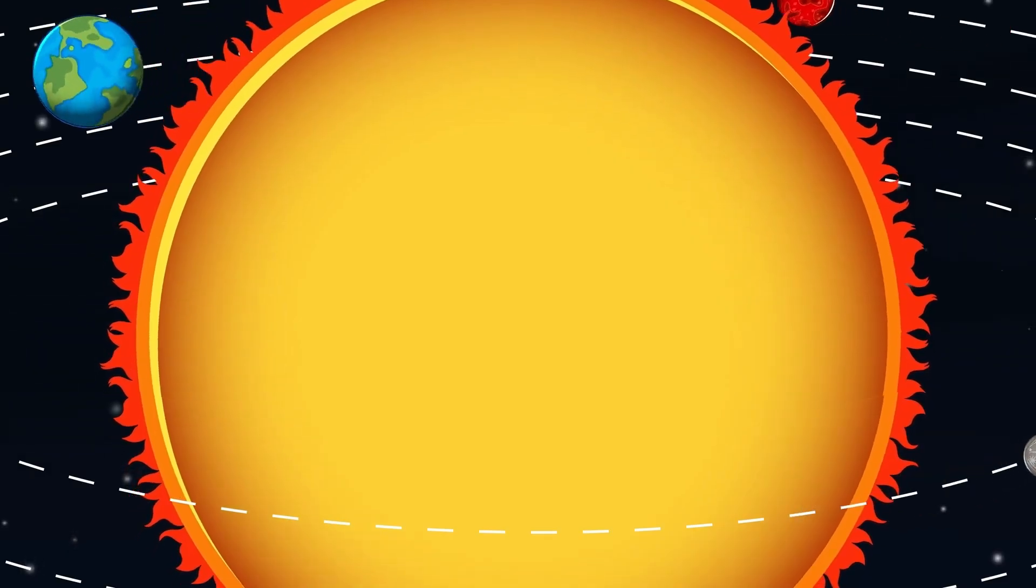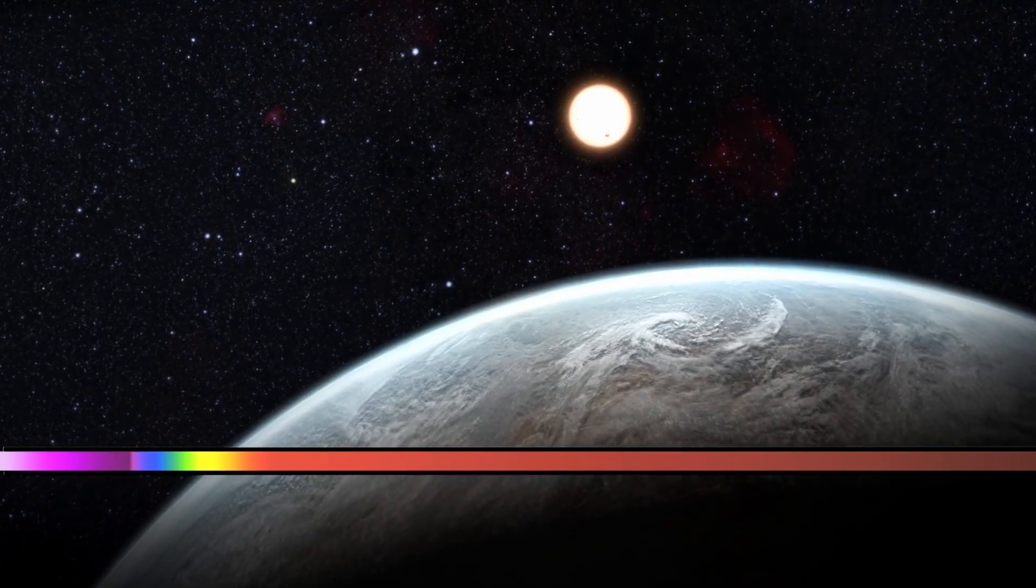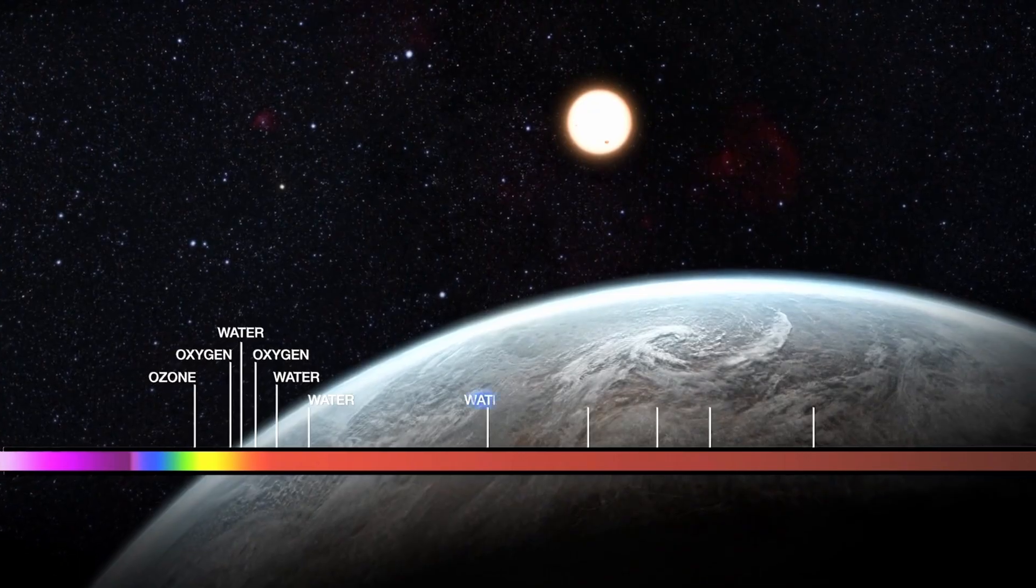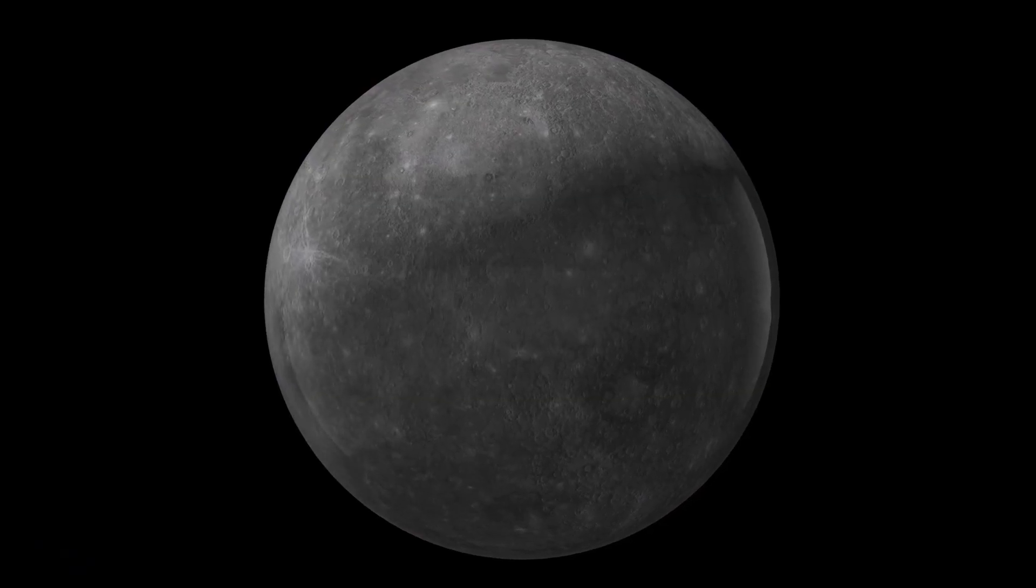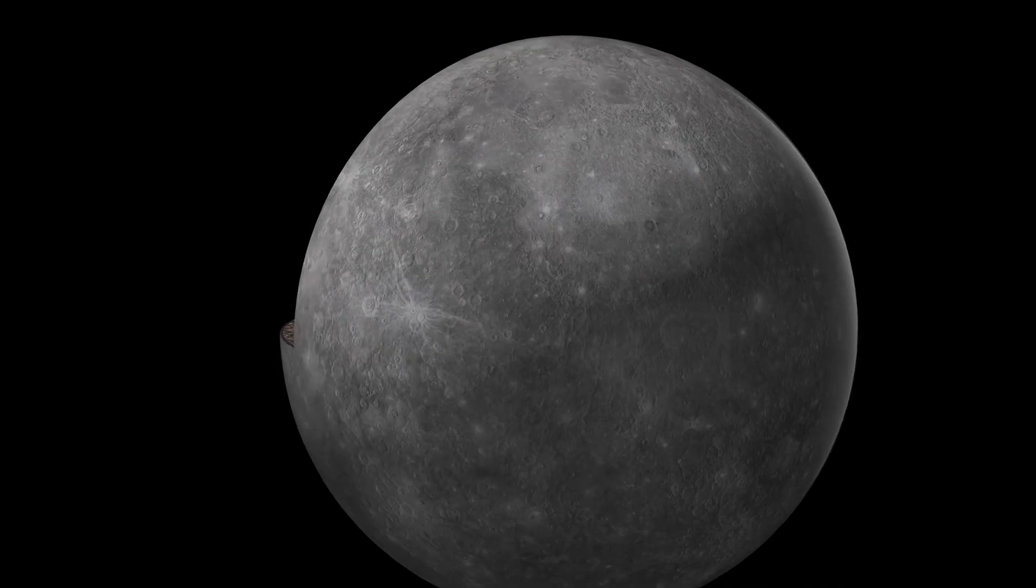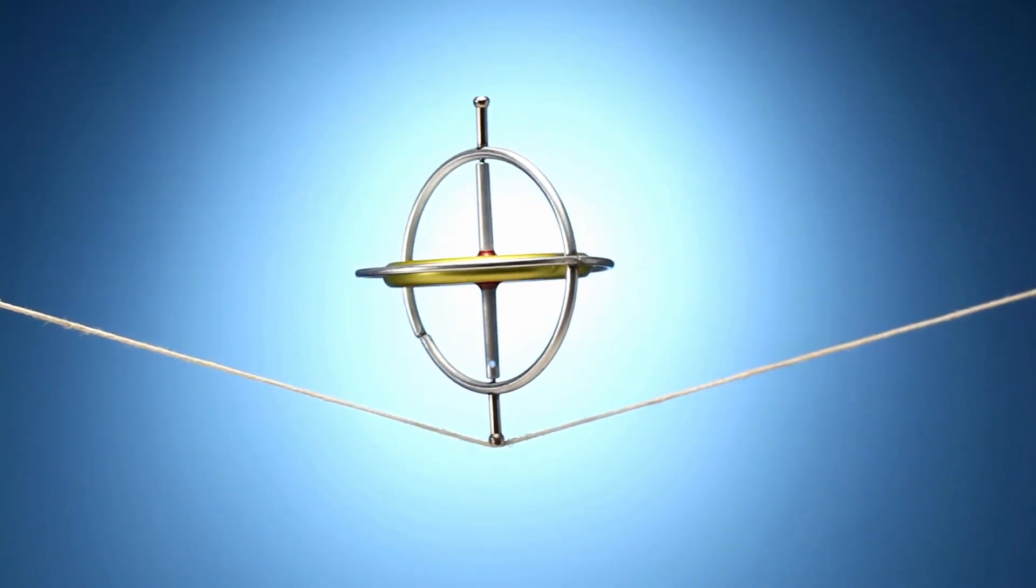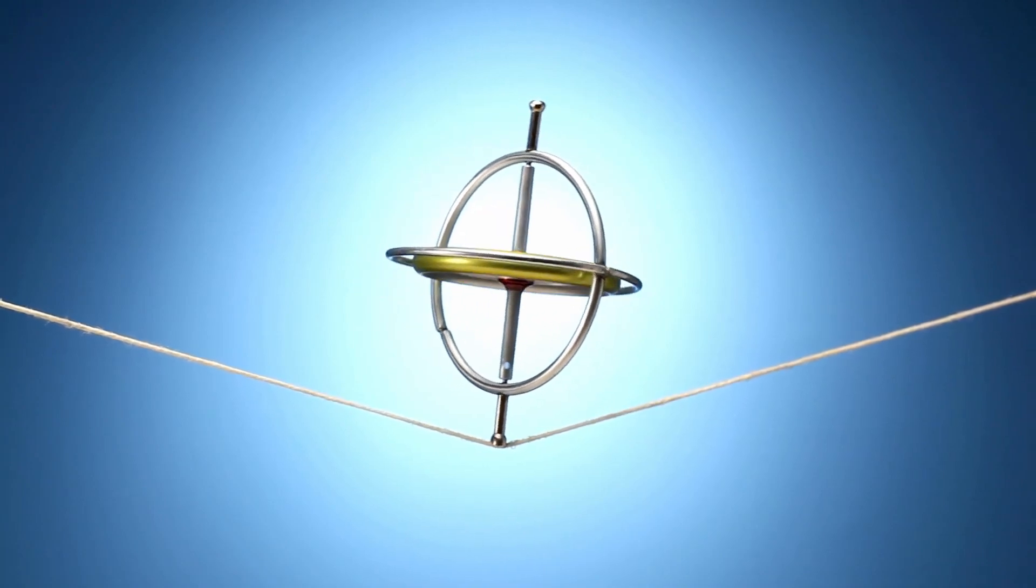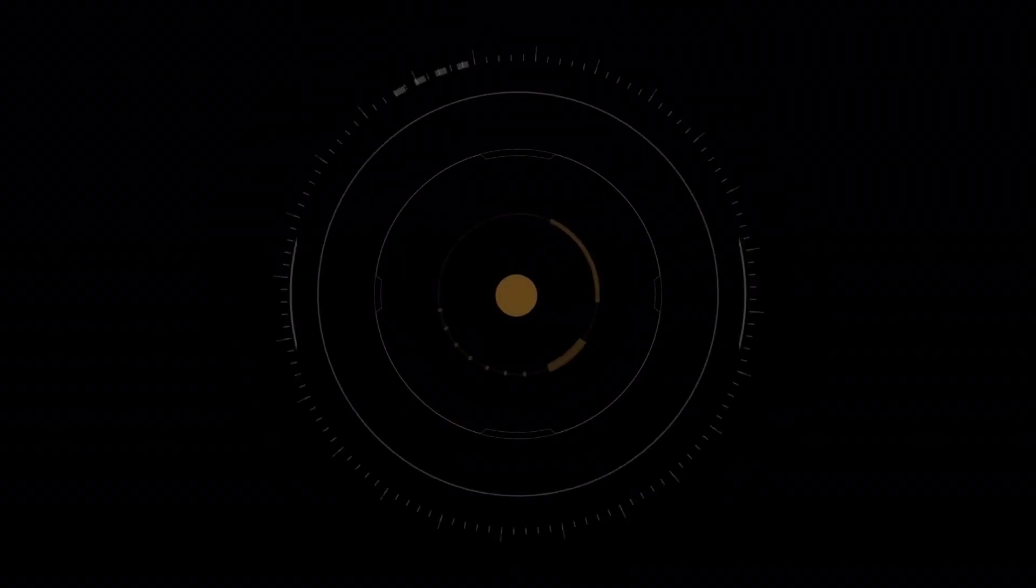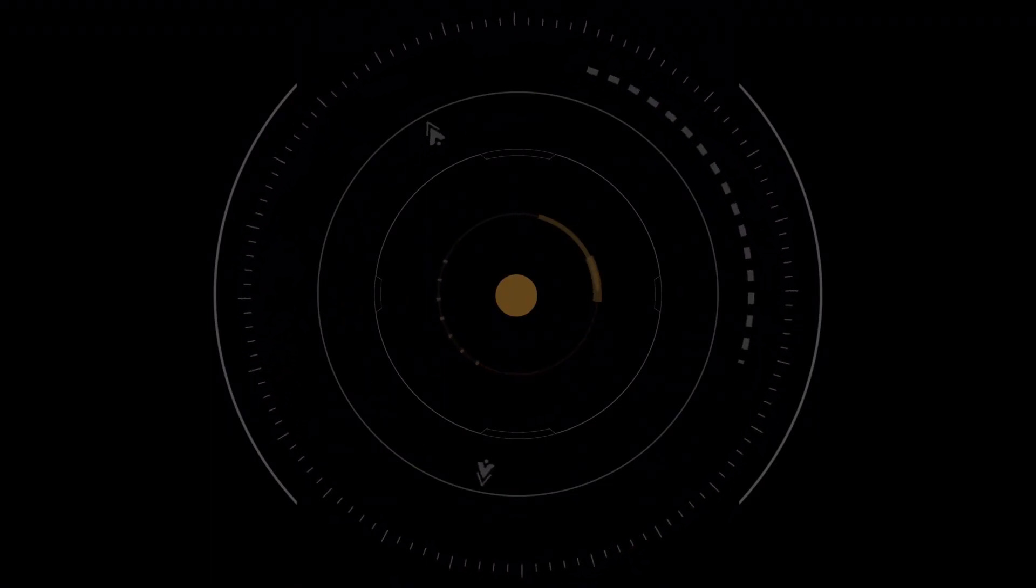According to this theory, Neo-Oumuamua isn't an explorer. It's a marker, an interstellar buoy placed in orbit to confirm that humanity has passed a technological threshold. Perhaps quantum communication, perhaps gravitational manipulation, perhaps something we don't yet understand. The presence of synchronized pulses, electromagnetic anomalies and altered gravitational measurements all point to a chilling possibility. We have crossed the Veil, and now the universe is watching what we do next.